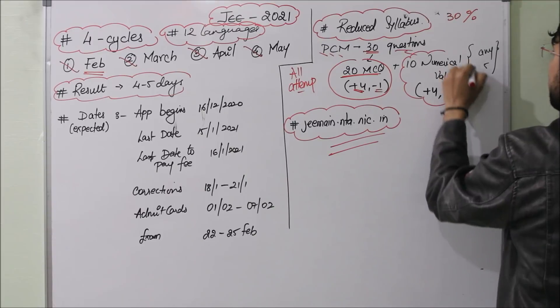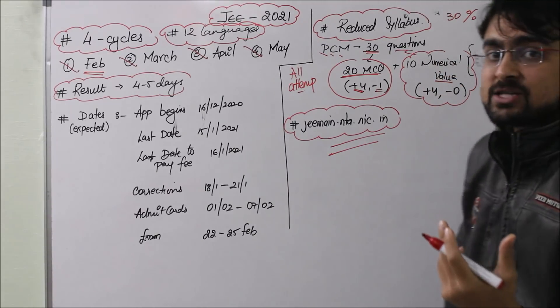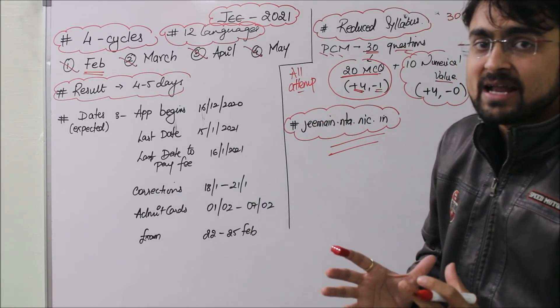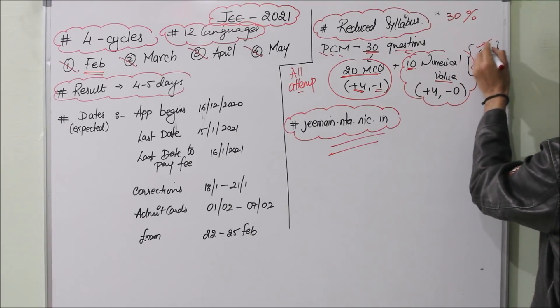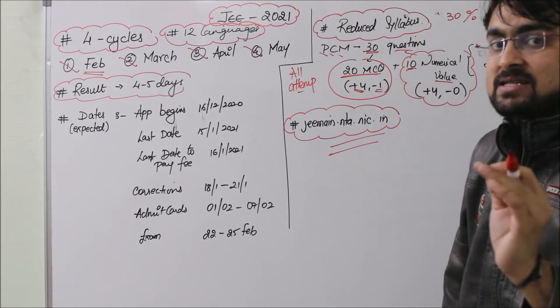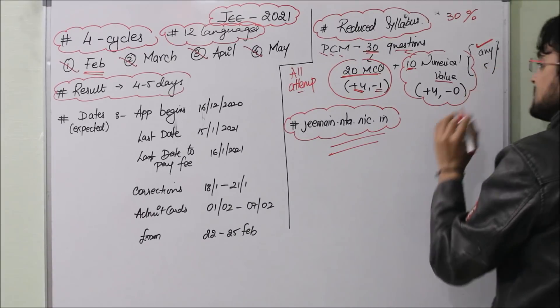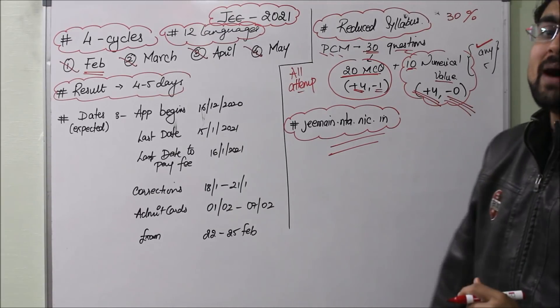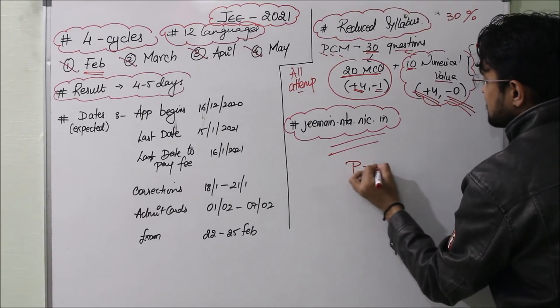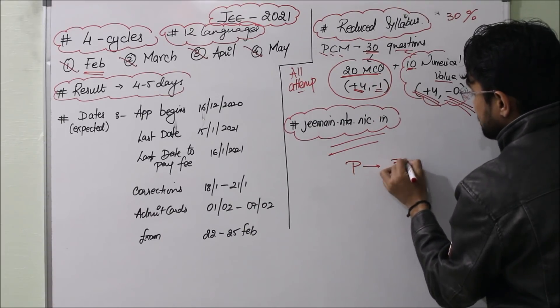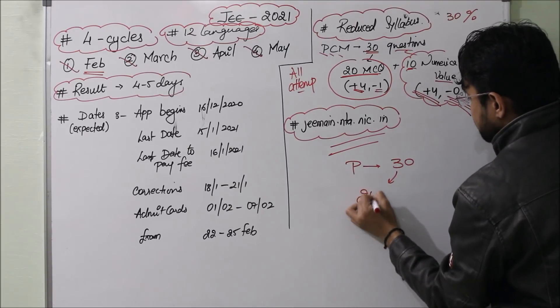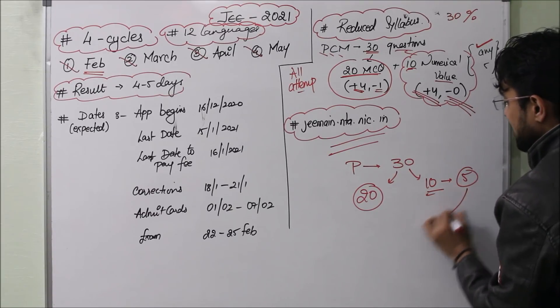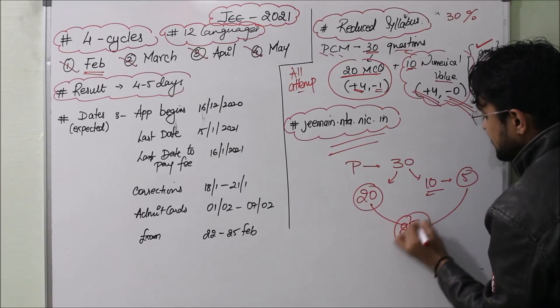You will have 10 questions which are numerical based, and you will have to solve these questions. Out of 10 questions, if you attempt 5, you don't have to do all 10. If you give the correct answer, there's no negative marking. So you will attempt 5 out of 10, which means overall you will answer 25 questions.